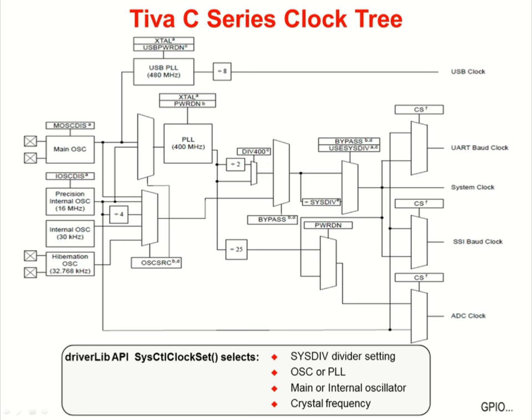This is the Tiva C-Series clock tree. Its flexible implementation provides you with the different types of clocks you need for low power operation, for low cost operation, and for high precision operation. If you look at the system clock line on the right of this diagram and follow it back through the multiplexers, you'll find that any of the 4 fundamental clock sources can drive the system clock.